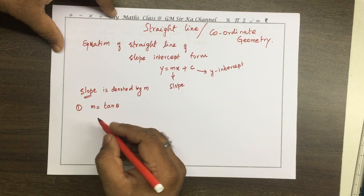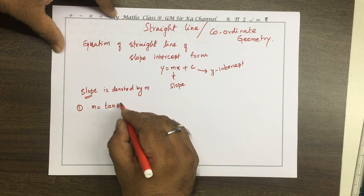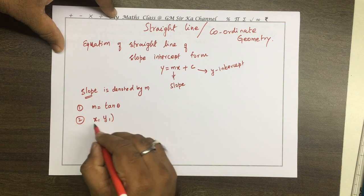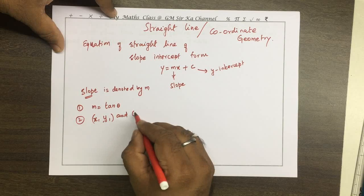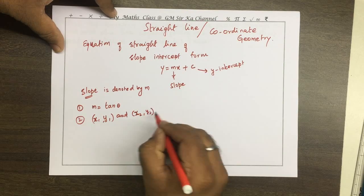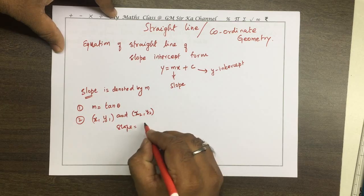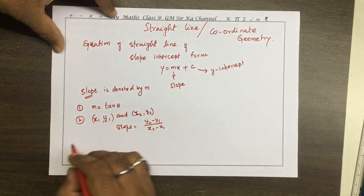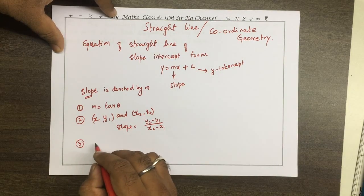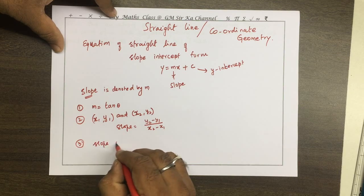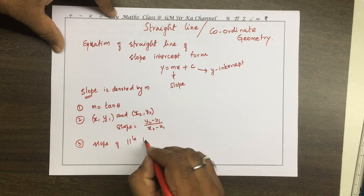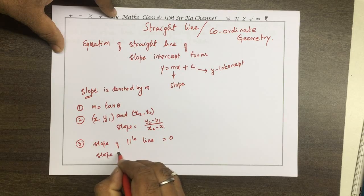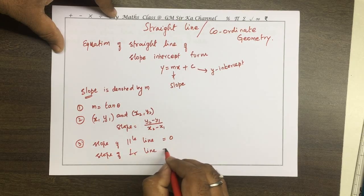Slope: theta is the angle of inclination. When two points are given, (x1, y1) and (x2, y2), the slope is equal to (y2 - y1) / (x2 - x1). We also know that the slope of a line parallel to the x-axis is equal to 0, and the slope of a line perpendicular to the x-axis is equal to infinity.